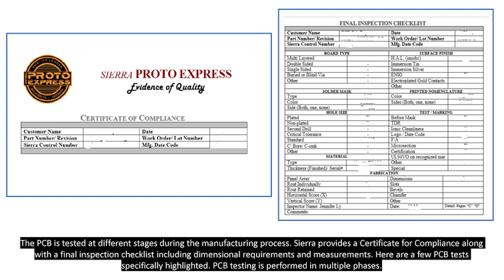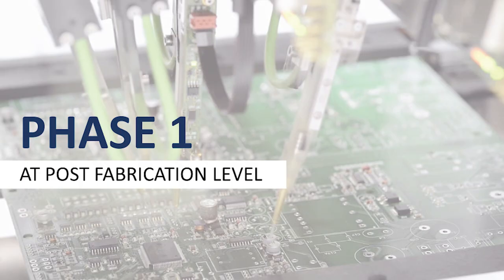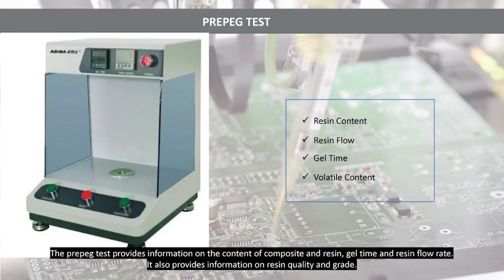PCB testing is performed in multiple phases. The prepreg test provides information on the content of composite and resin, gel time, and resin flow rate. It also provides information on resin quality and grade.